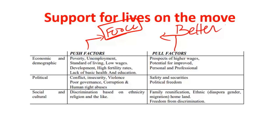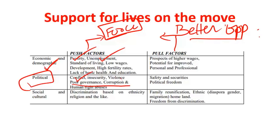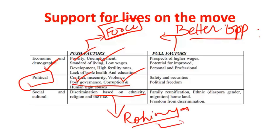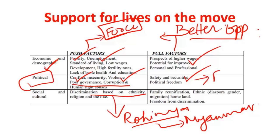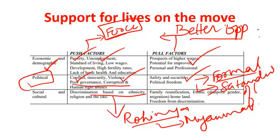Push factors include economic reasons such as increasing poverty and unemployment, political reasons like conflict or violence, and discrimination based on ethnicity or religion, like that faced by Rohingya people in Myanmar. Pull factors include aspirations for higher wages, increased safety and security, movement towards more formal sectors of employment, and an increased standard of living. These pull factors are the major reasons for migration of Indians to developed countries like the USA, Europe, or Gulf countries.